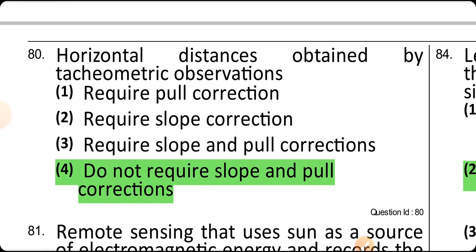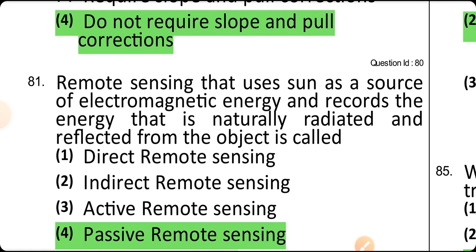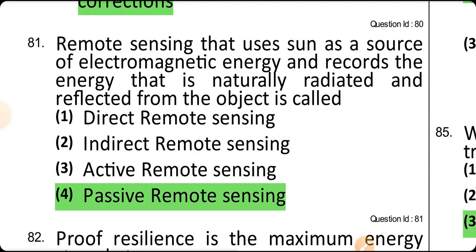Original distances obtained from tacheometric observation do not require slope and pull correction. Remote sensing that uses the sun as a source of electromagnetic energy and records the energy that is naturally radiated and reflected from objects is called passive remote sensing.